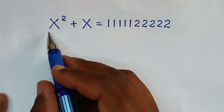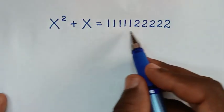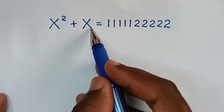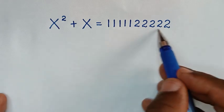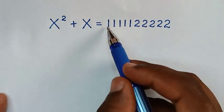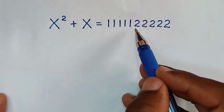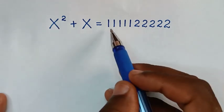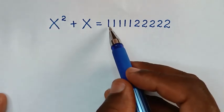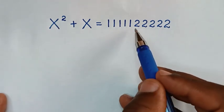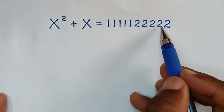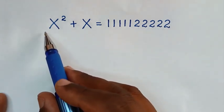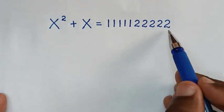Hello, you are welcome to solve this math problem, which is x squared plus x is equal to this long number 1,111,122,222 — where there are five 1s and five 2s. To find the values of x from this equation.